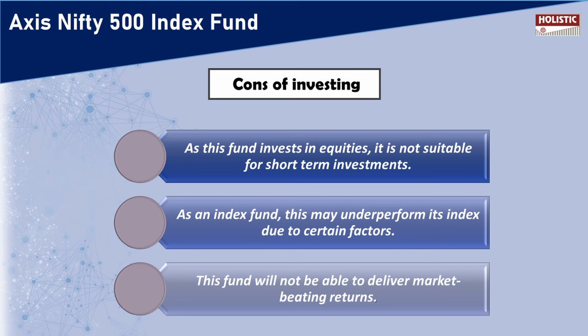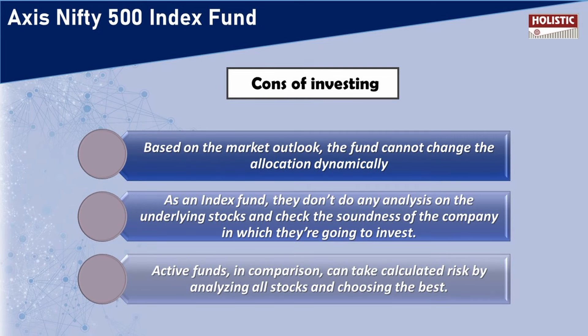The best this fund can do is match the returns the index is giving — it cannot beat the index, which is not possible with an index fund. Also, it cannot change its allocation dynamically based on market outlook, unlike an actively managed fund where the fund manager plays to the market's advantage. Here, if a certain sector or capitalization is performing well, the fund will not adjust its allocation accordingly.